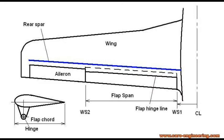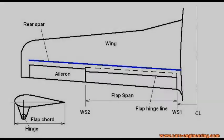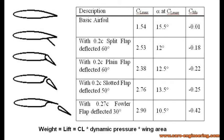I want to show you the difference the flap design has on the lift it can produce. Here is an example of several different flap types that were used on the same airfoil, a NACA 23012. The most important number is the maximum lift coefficient, or CL max, of the airfoil. For comparison, all the flaps have the same relative chord of 20%. The basic airfoil without the flap can reach a CL max of 1.54.